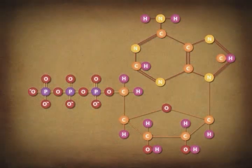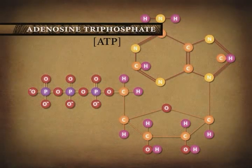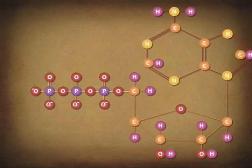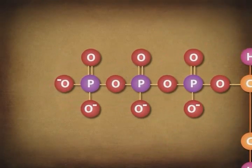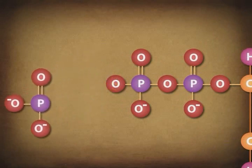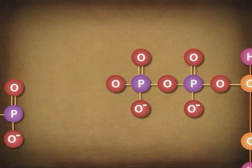For example, adenosine triphosphate, or ATP, is a biological compound that our cells use as their primary energy source. Here's how it works. A molecule of ATP contains a chain of three phosphates. When instructed to do so by an enzyme, ATP loses the end-most phosphate group, releasing energy in the process.